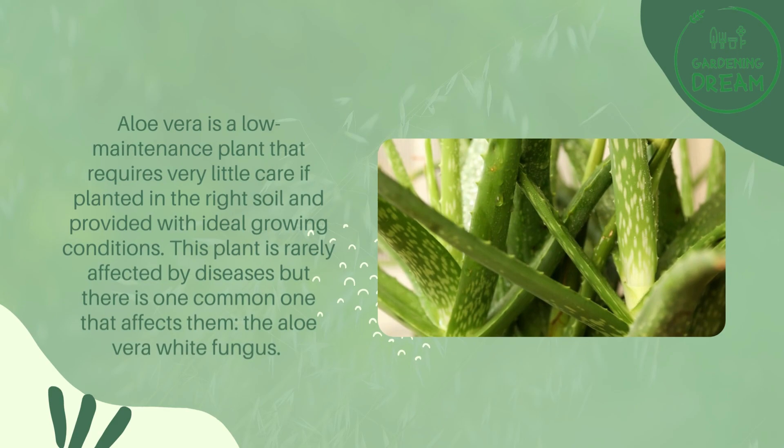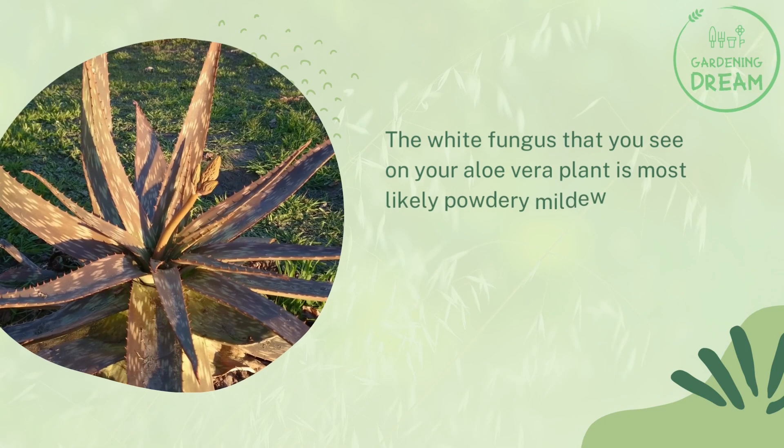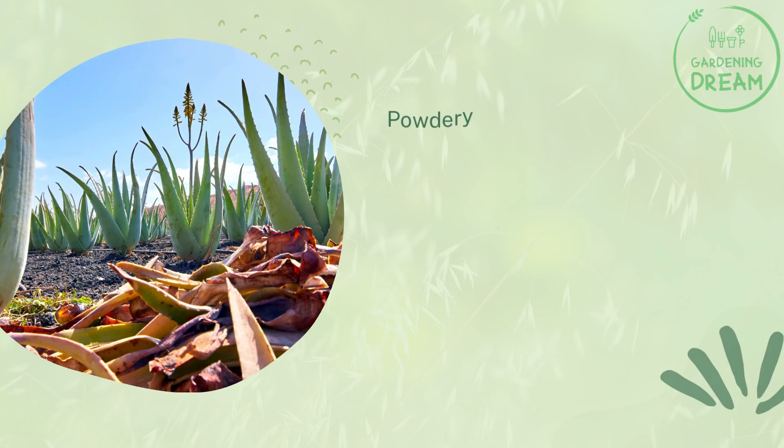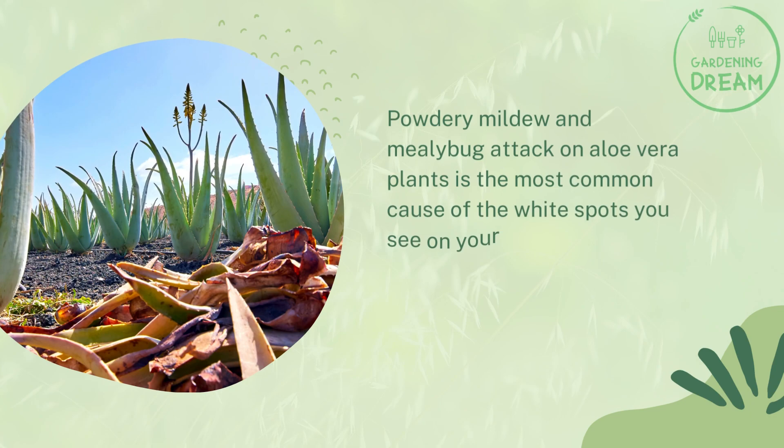This plant is rarely affected by diseases, but there is one common one: the aloe vera white fungus. The white fungus that you see on your aloe vera plant is most likely powdery mildew or an infestation of mealybugs. Both of these are usually associated with environmental stress where the plant is grown. Powdery mildew and mealybug attack on aloe vera plants is the most common cause of the white spots you see on your plants.